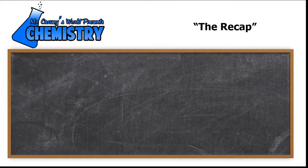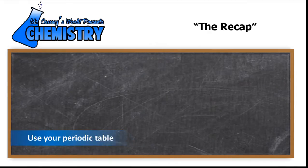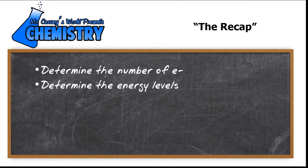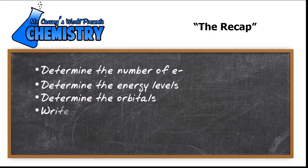Now, the recap. Using our periodic table, we determine the number of electrons. Determine the energy levels. We then determine the orbitals, all the way up to 5 or 4D, 5S and 4D.